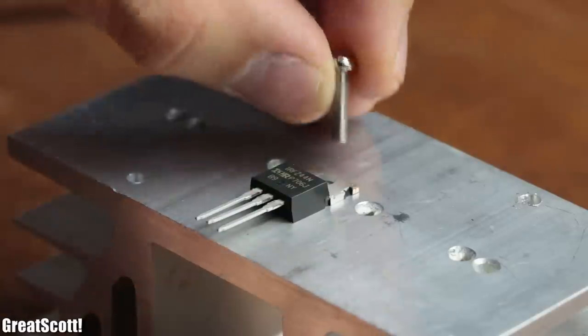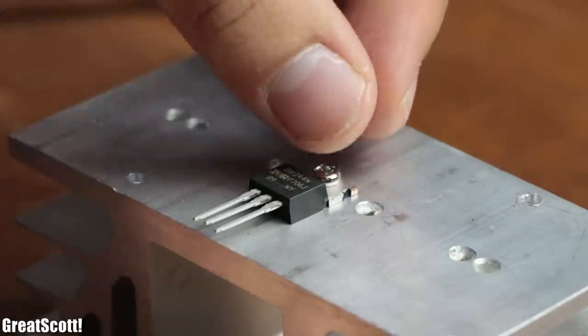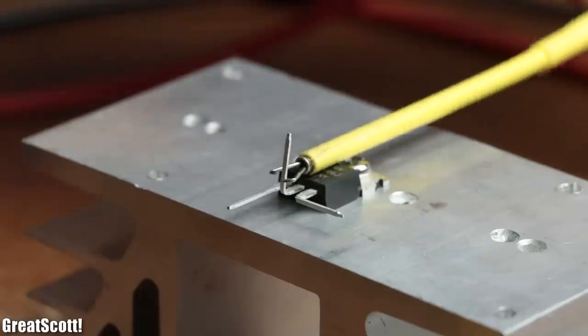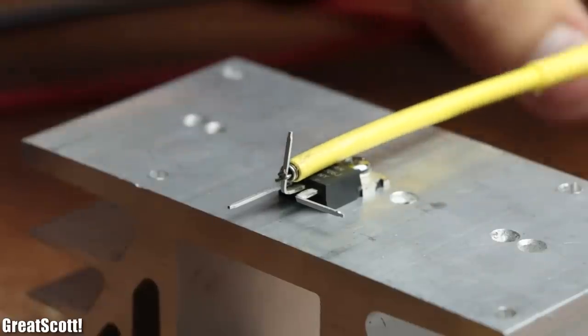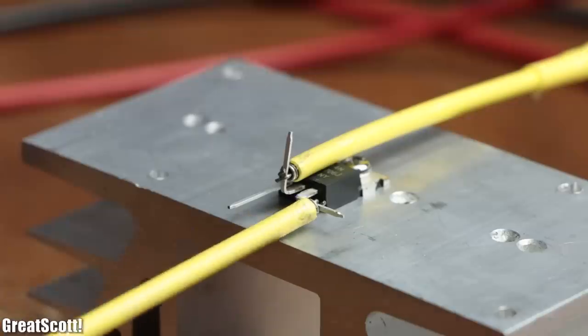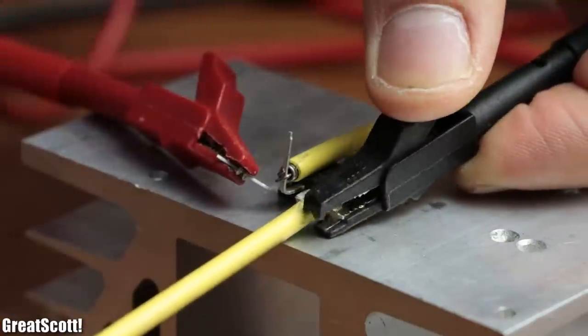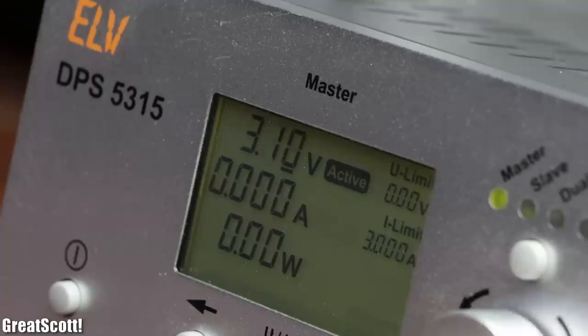As an example I mounted the MOSFET to my big heatsink, connected its drain to the plus terminal of my power source, its source to the minus terminal, and its gate to another voltage source, which I slowly cranked up.